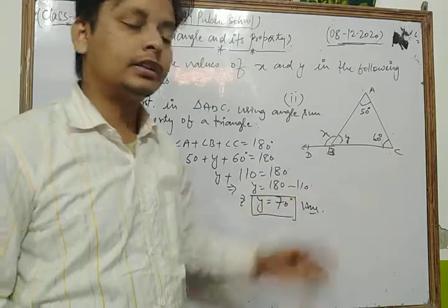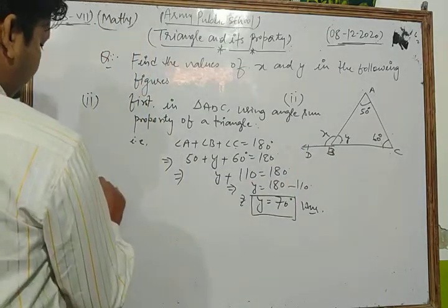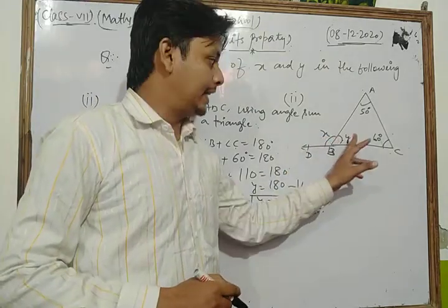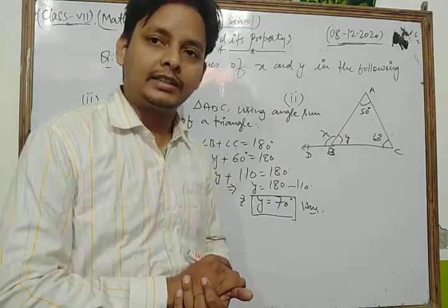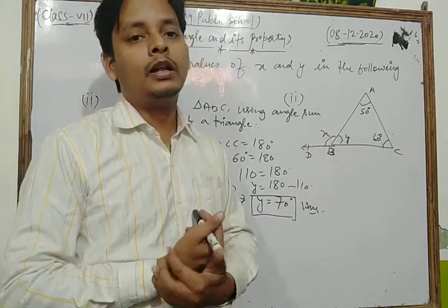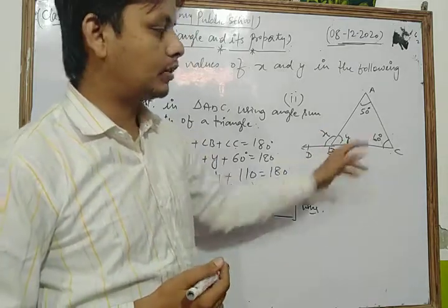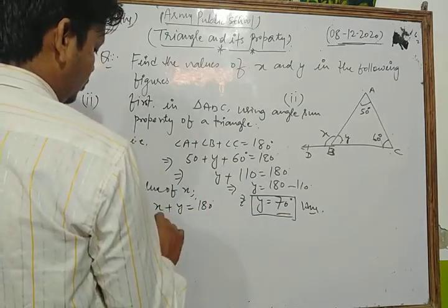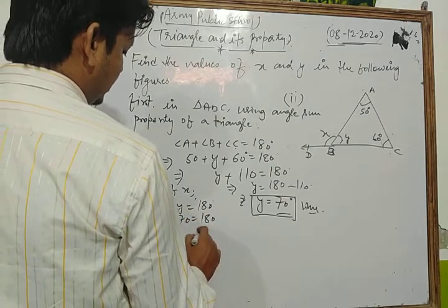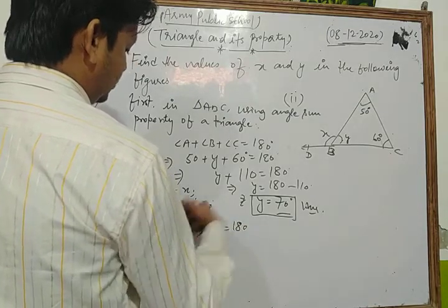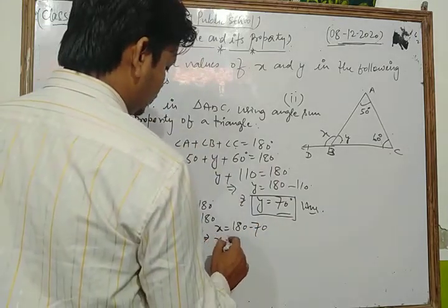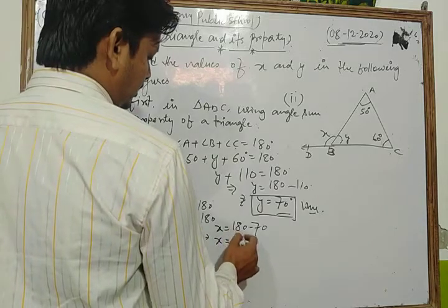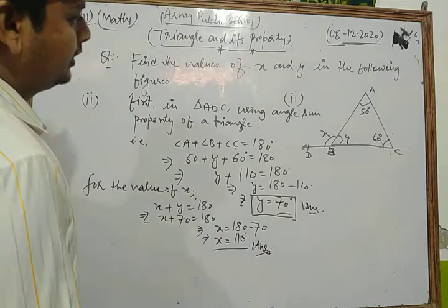Now we find the value of x. Angles x and y form a linear pair, so x plus y equals 180 degrees. Substituting y as 70: x plus 70 equals 180, so x equals 180 minus 70, which gives x equal to 110 degrees.